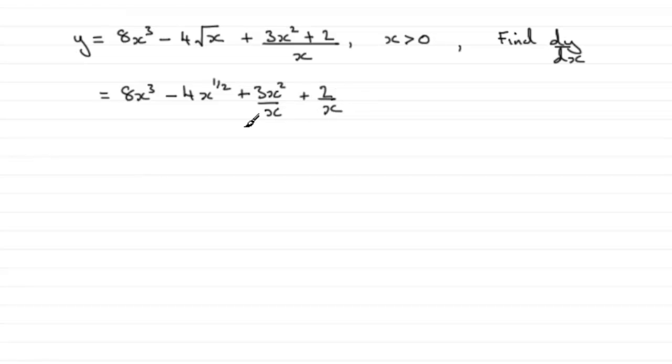But it's still not in the right form yet. We've got to modify these two terms. So let's just put equals again, copy down the 8x cubed and the minus 4x to the power half. This term, though, we can cancel out the x into the x squared and just get 3x. And for this one, we've got 2 times 1 over x.